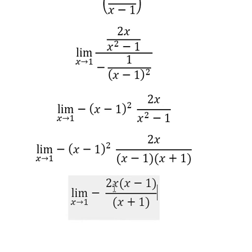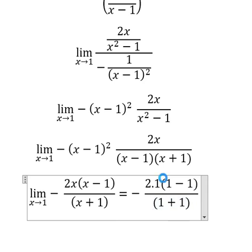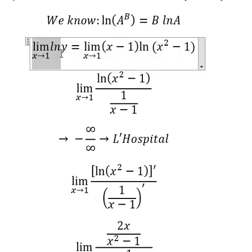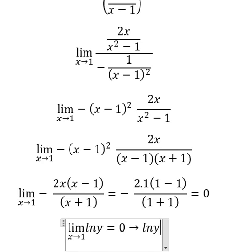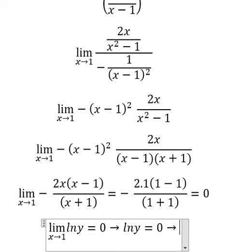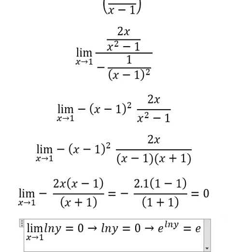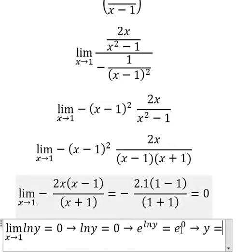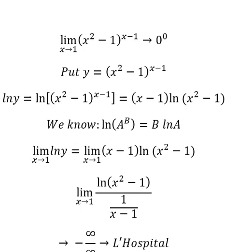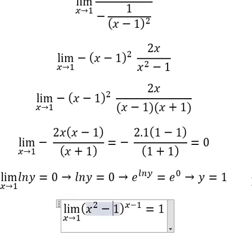When s approaches number 1, we substitute 1 here, here, and here to get the final answer, which equals 0. That means the limit of ln(Y) equals 0. So we raise e to the power of ln(Y) on both sides. We see that e^(ln Y) equals Y, and e^0 equals 1. So the limit of this expression equals number 1, and this is the final answer.